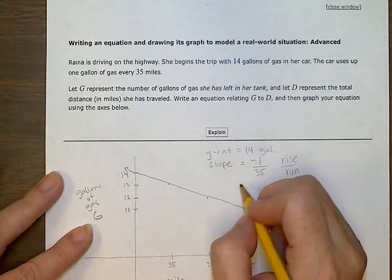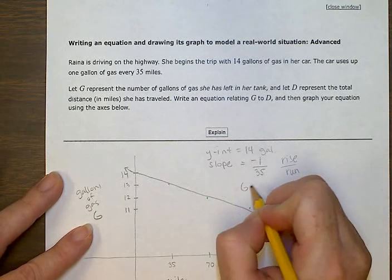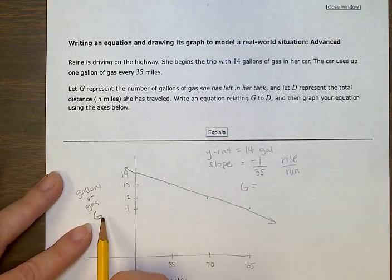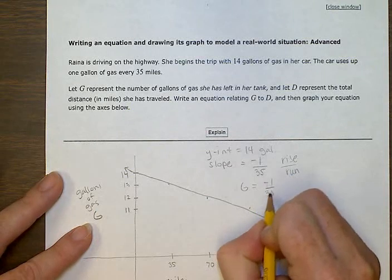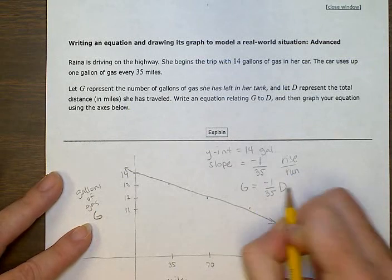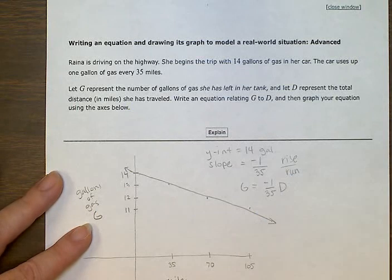So our G, which is like our y, equals minus 1 over 35. Our x side is represented by D.